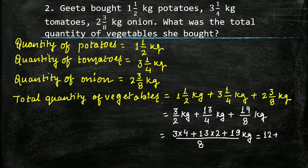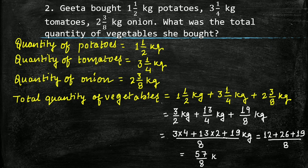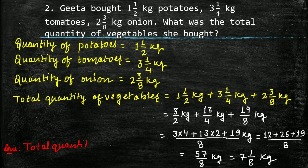Now solve it: 3 into 4 is 12, plus 13 into 2 is 26, plus 19 upon 8. This will be equal to 12 plus 26 plus 19, which equals 57 upon 8 kg. Convert it into a mixed fraction and we will get 7 whole 1 upon 8 kg. The answer is: total quantity of vegetables bought is equal to 7 whole 1 upon 8 kg.